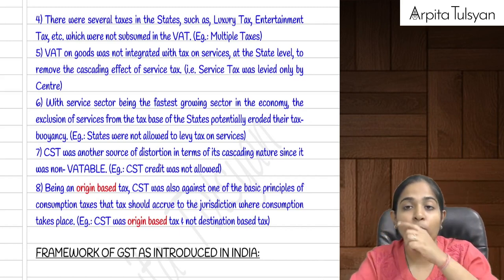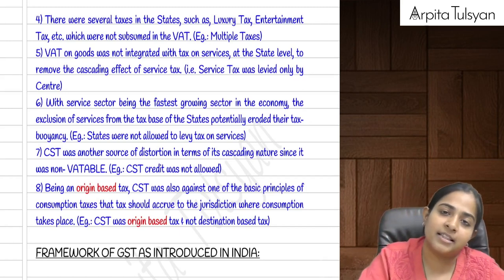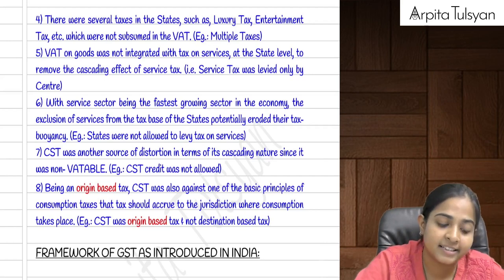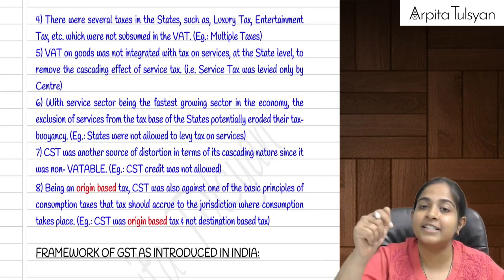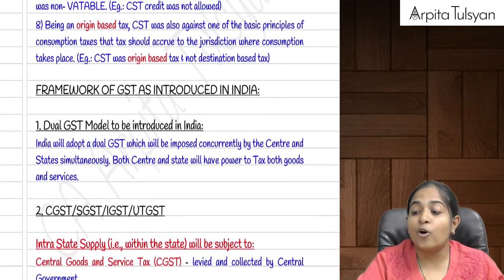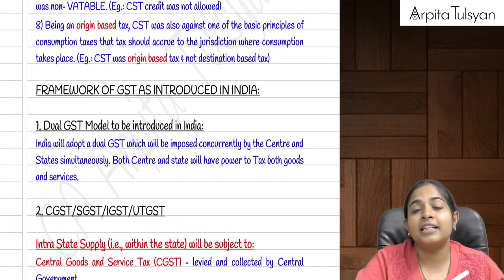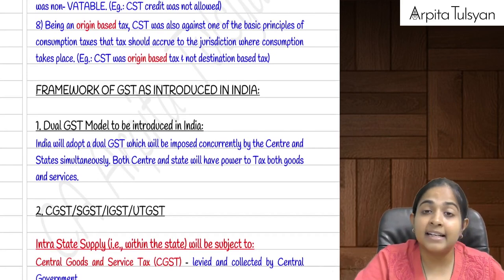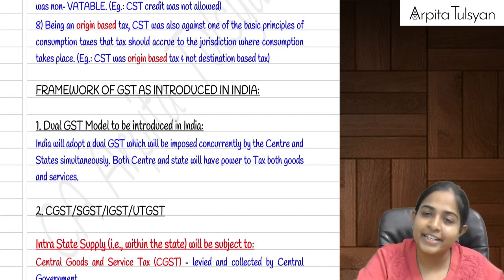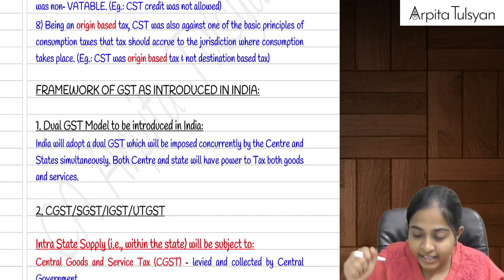Another clash was that service tax — the right to levy taxes on services — was only with the center. Similarly for goods, the power to levy VAT was only with the state; only Central Sales Tax on certain transactions was allowed to be levied by center. This became a big clash between center and state, which is resolved in GST through the constitutional amendment. Also, CST was the opposite of GST — it was an origin-based tax, whereas GST is destination-based.